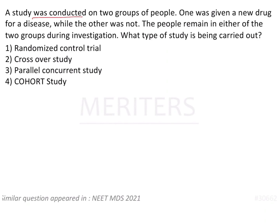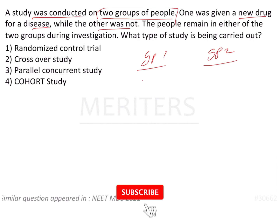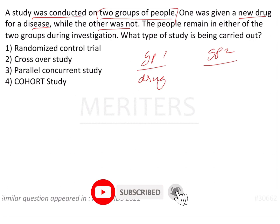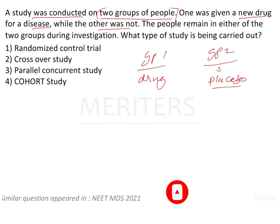A study was conducted on two groups of people. Group 1 was given a new drug for a disease, while the other group was not — meaning they received a placebo or served as the control.